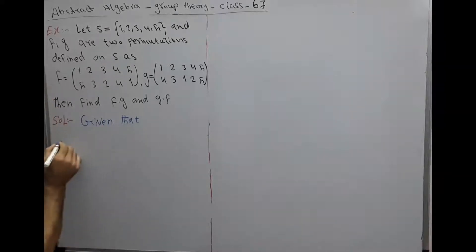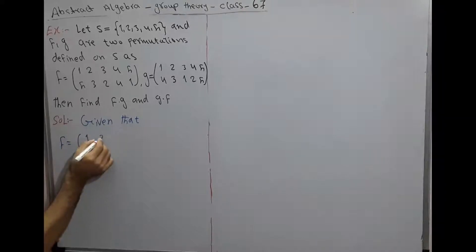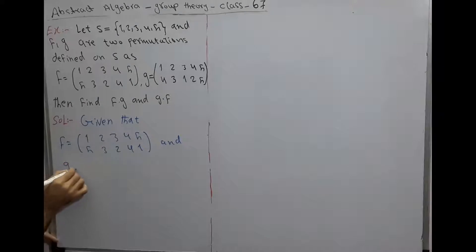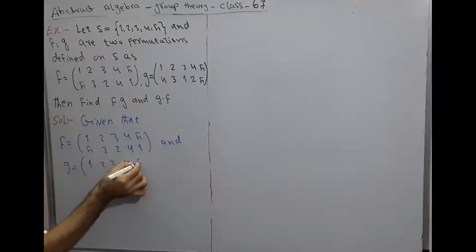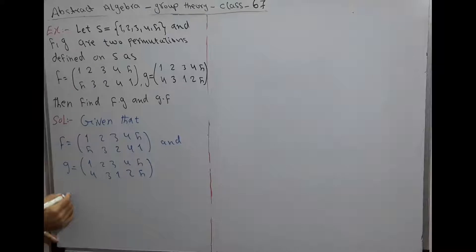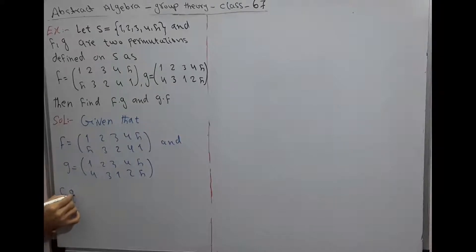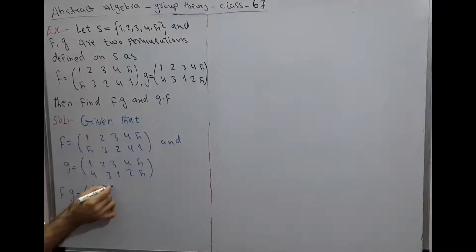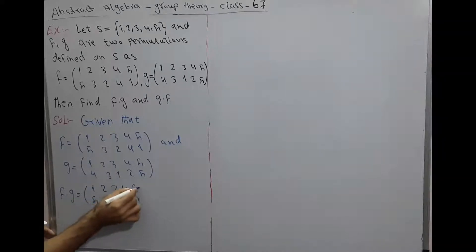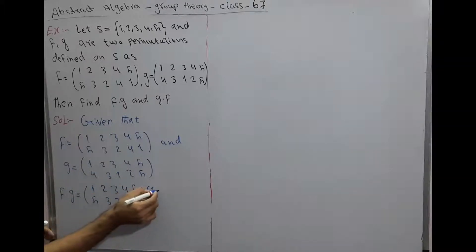As we already know, we will solve this in a short method. f∘g is equal to f — we have (1 2 3 4 5 / 5 3 2 4 1) — into g — we have (1 2 3 4 5 / 4 3 1 2 5).